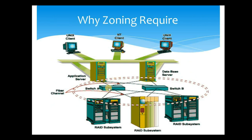Let me explain hard zoning with the help of the diagram. This switch has a domain ID because it is part of the fabric. The server is connected to one specific port and the storage system is connected to another port in this switch. In hard zoning, we group the domain ID of the switch with the port number where the server is connected and the port number where the storage system is connected. In soft zoning, we create FC alias, device alias, or alias in the switch for the WWPN of the server port and the WWPN of the storage port, and do the grouping between those aliases only.